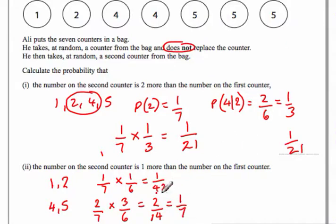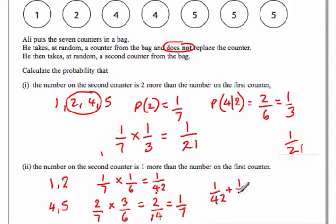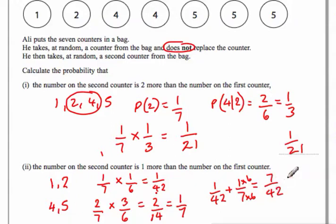So now we're asking: what's the probability of these events happening, or those events happening? We can't have them both happening at the same time, so we're using the word 'OR' and we add the probabilities. One over forty-two plus one over seven — multiplying one over seven by six gives six over forty-two — so that's six over forty-two plus one over forty-two, which is seven over forty-two. Dividing both by seven gives one over six.